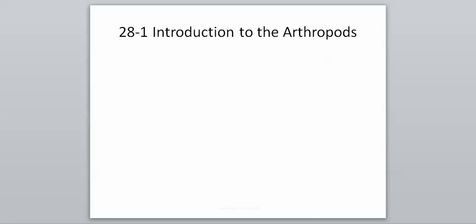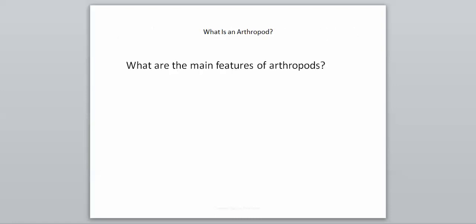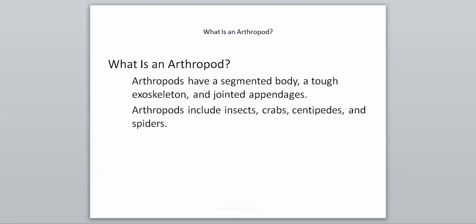We'll start with our first section in Chapter 28: the introduction to the arthropod. To understand what an arthropod is, we have to know its main features. Arthropods have a segmented body, a tough exoskeleton, and jointed appendages — those are three big things you need to know. Examples include insects, crabs, centipedes, and spiders, just to name a few, because this group has more organisms than any other animal group in the world today.